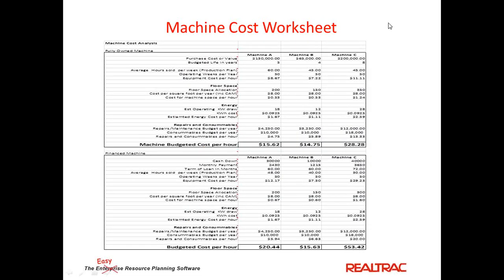When we talk about our machine cost worksheet, we have two operations: a fully owned machine and a financed machine. This gives us a nice opportunity to know exactly what each machine's budgeted cost per hour is. That includes hours per sold, the floor space allocation — regardless of whether your building is paid for or leased — the energy draw, and any repairs and consumables that you typically see per year. You can see this for both a financed machine and a budgeted owned machine.